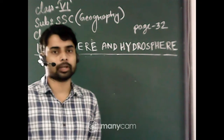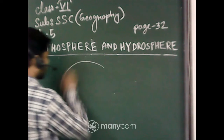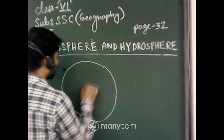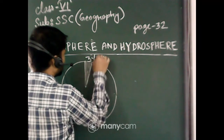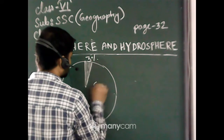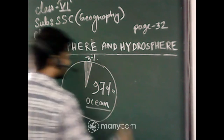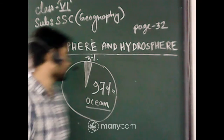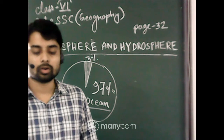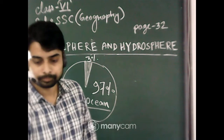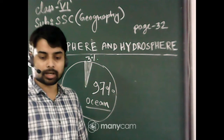In the hydrosphere, more than 97% of the water is saline water. I am drawing a pie chart to help you understand. Only 3% is drinkable fresh water, while 97% is ocean water which we cannot drink because it is very salty.